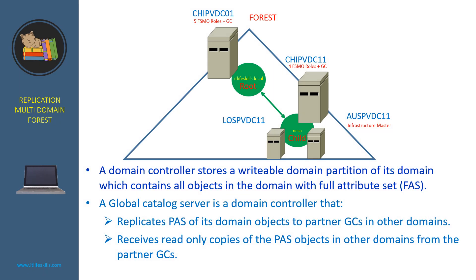A domain controller stores a writable domain partition of each domain which contains all objects in the domain with full attribute set. A global catalog server is a domain controller that replicates a partial attribute set of its domain objects to partner global catalog servers in other domains. It also receives read-only copies of the partial attribute set objects in other domains from the partner global catalog servers.